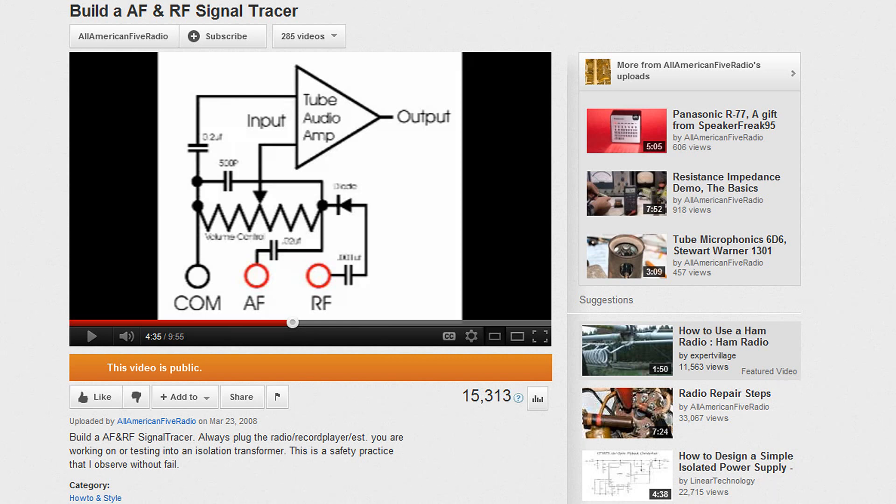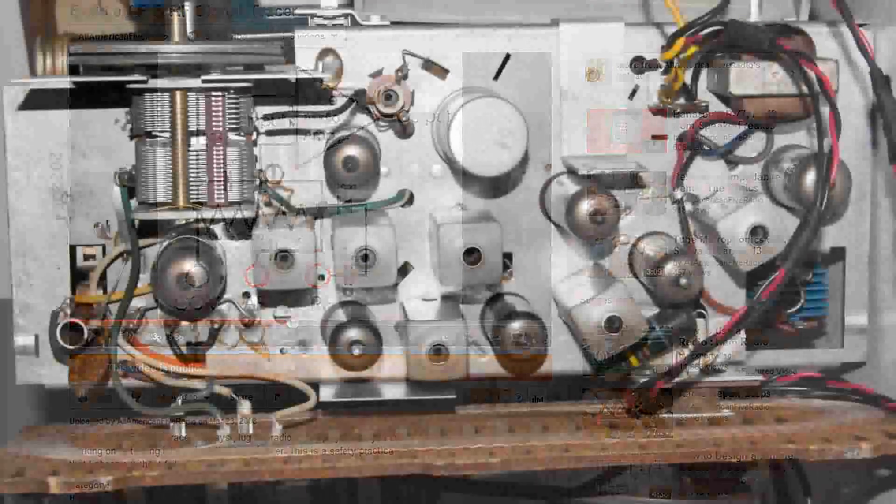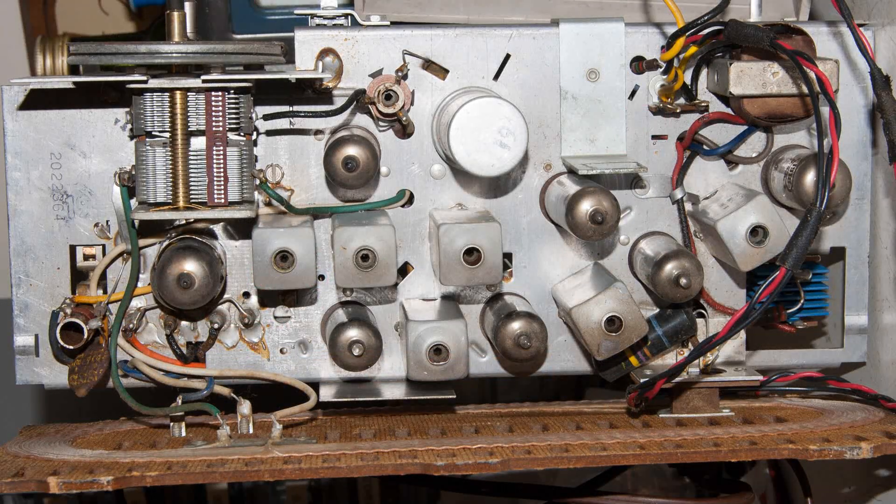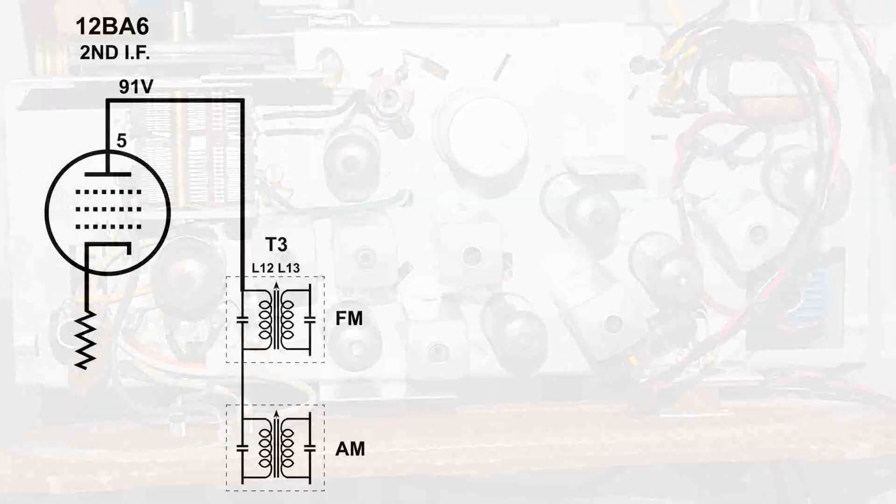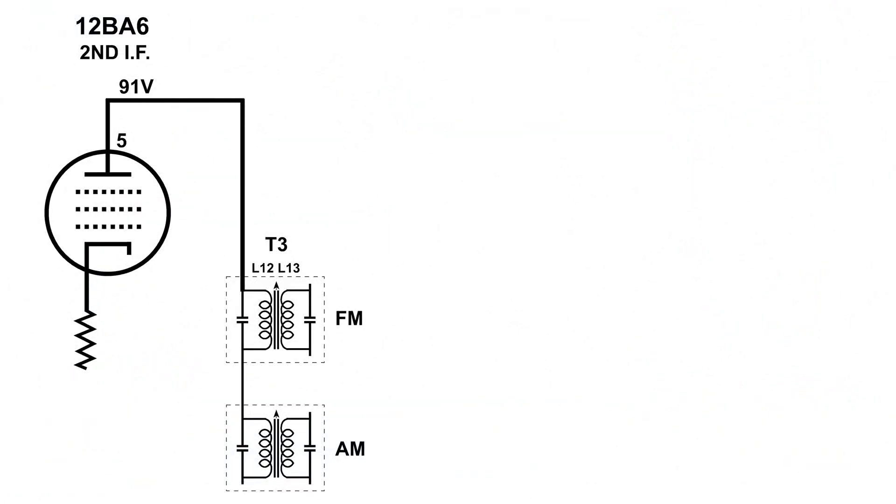I had gotten a question about getting a cheap signal generator for working with these radios. I thought I'd expand on this project and pull out the 10.7 megahertz for the FM and the 455 kilohertz for the AM of this same radio.